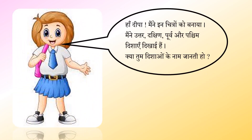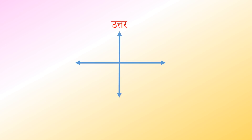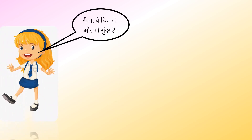'हाँ दीपा, मैंने इन चित्रों को बनाया। मैंने उत्तर, दक्षिण, पूर्व और पश्चिम दिशाएं दिखाई हैं। क्या तुम दिशाओं के नाम जानती हो?' रीमा कहती है — उत्तर यानी North, दक्षिण यानी South, पूर्व यानी East, पश्चिम यानी West। दीपा बोलती है, 'रीमा, ये चित्र तो और भी सुन्दर हैं।'